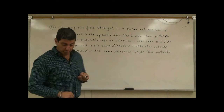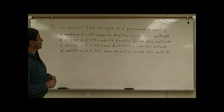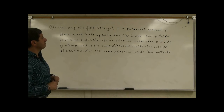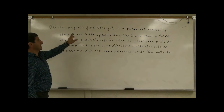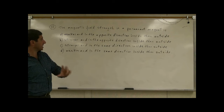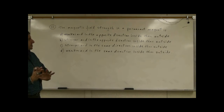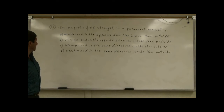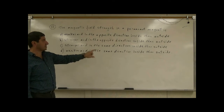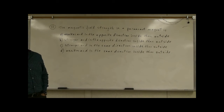Now we come to multiple choice question number 12. It says the magnetic field strength in a permanent magnet is: Choice A, weaker and in the opposite direction inside than outside; Choice B, stronger and in the opposite direction inside than outside; Choice C, stronger and in the same direction inside than outside; and Choice D, weaker and in the same direction inside than outside.